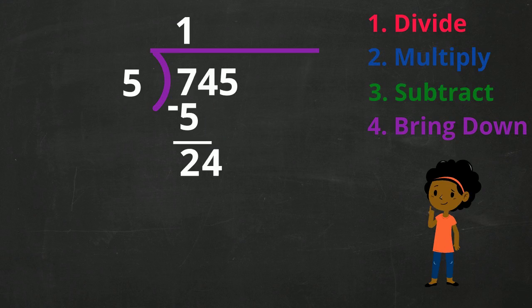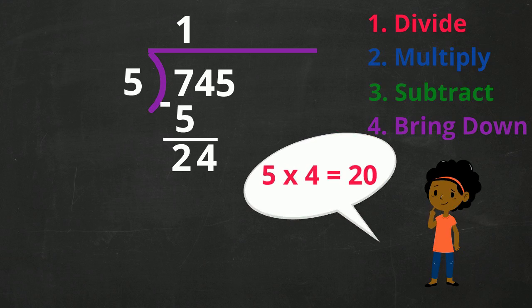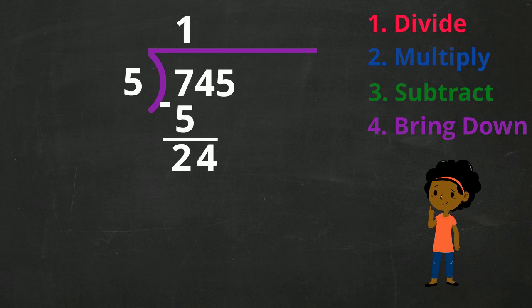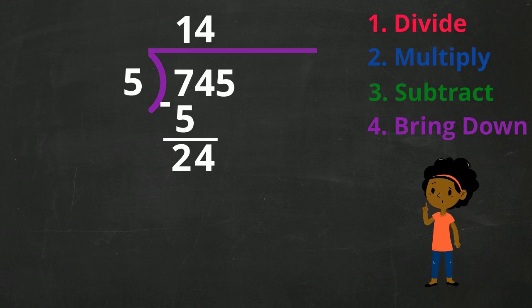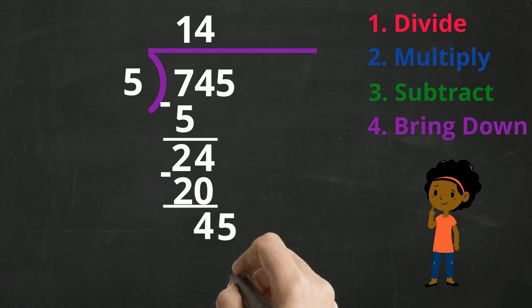We have now completed the first series of 4 steps. Let's repeat them again. Step 1: Divide. How many times does 5 go into 24? Well, we know that 5 times 4 is 20, and 5 times 5 is 25, so the answer will be 4. Let's put the 4 over top of our 4 in the dividend. Step 2: Multiply. We will now multiply the 4 times our 5 to get an answer of 20. Step 3: Subtract. If we subtract 20 from 24, it leaves us with 4. Step 4: Bring down. Let's now bring down the 5 next to our 4, and we have a number of 45.